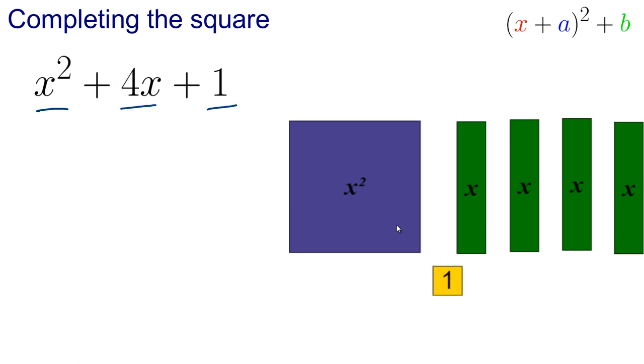So that's x squared plus 1, 2, 3, 4x plus 1. Now when we're completing the square what we're trying to do is make that as close to a perfect square as possible.